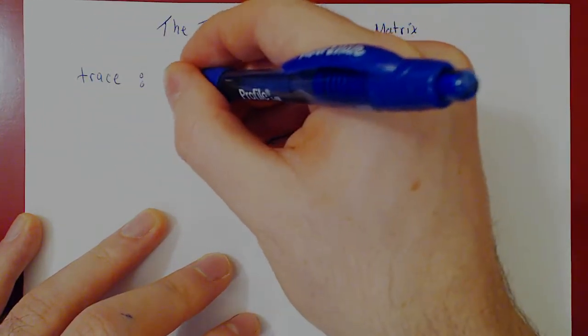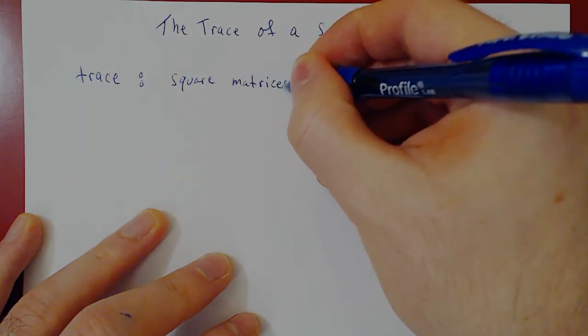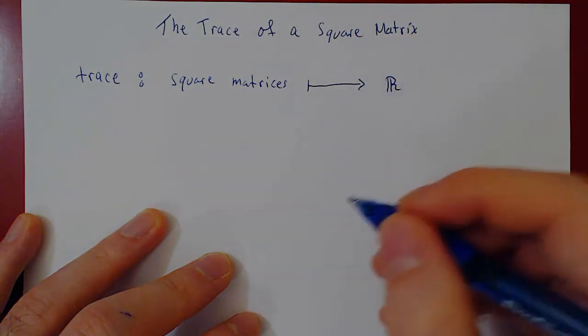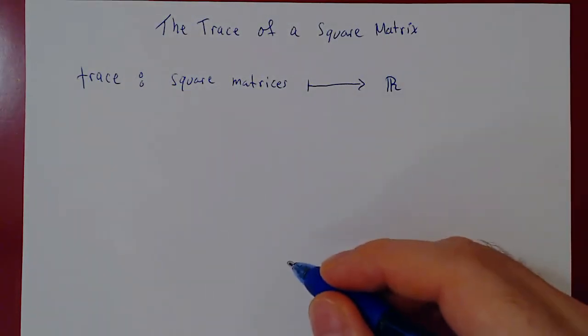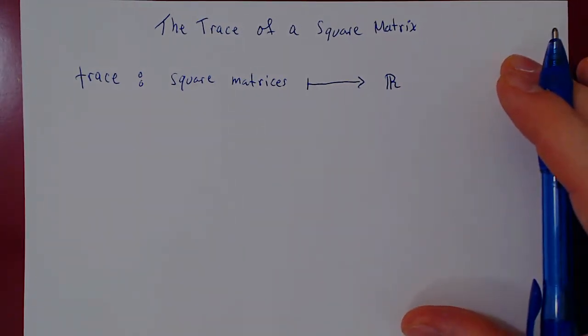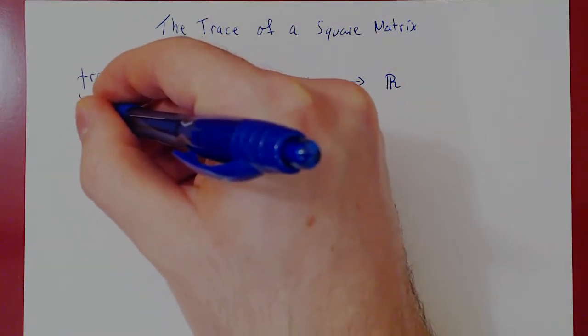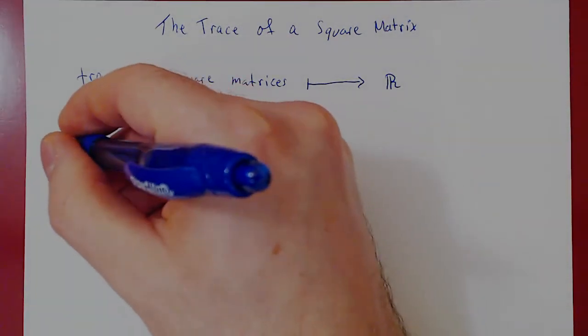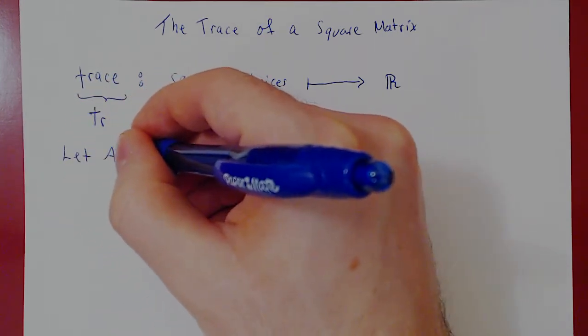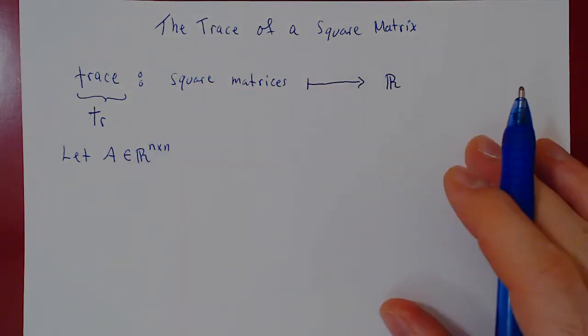So the trace, T-R-A-C-E, is a function from all square matrices to the real numbers. So the trace takes a square matrix and outputs a real number. Let's define the trace and then look at some of its properties. We'll denote the trace usually by simply lowercase tr. T-R for the trace of a matrix. So, if we let A be an arbitrary square matrix, so an element of R n by n. So A is an n by n square matrix.